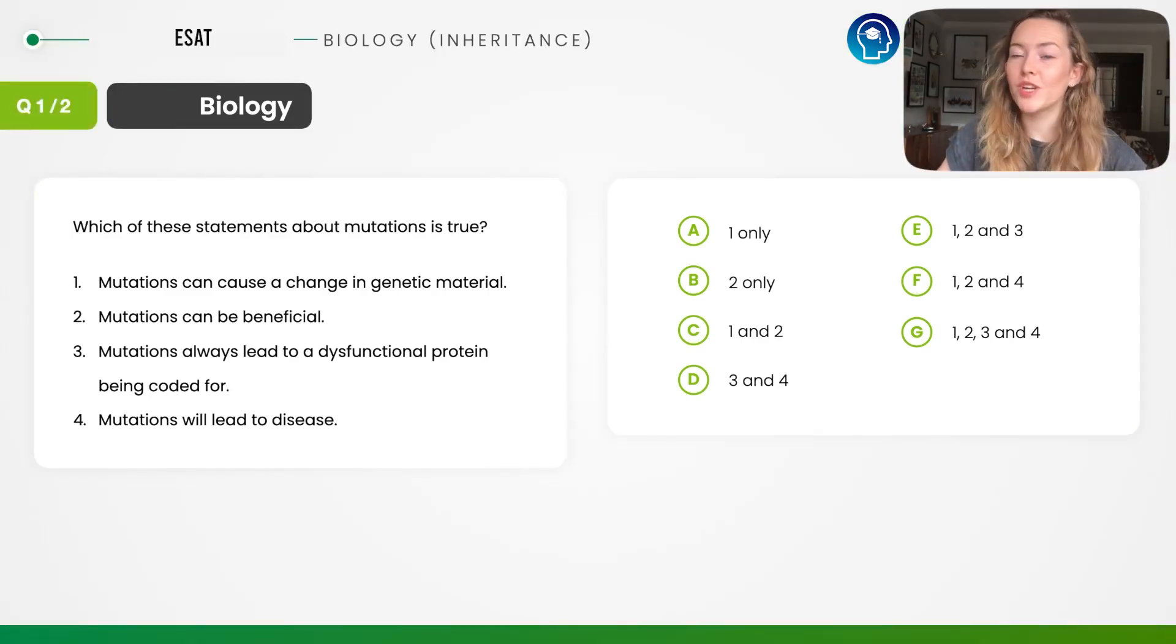In this question we've been asked which statements are true. So I'm going to underline true just so I don't make any error, and I'm going to annotate with tick and cross marks as I go through to select the right option. Statement one: mutations can cause a change in genetic material. They've used the word can here, which is quite an open word, and yeah, I agree mutations can cause a change in the genetic material.